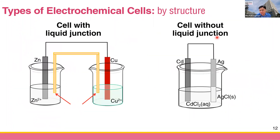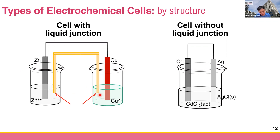The third way is to categorize by structure. The first type is the cell with liquid junction, and the second is the cell without liquid junction. The zinc-copper cell is an example with a liquid junction: you have more than two portions of liquid — the zinc ion solution and the copper solution are separated, with junctions at the salt bridge interface on both sides.